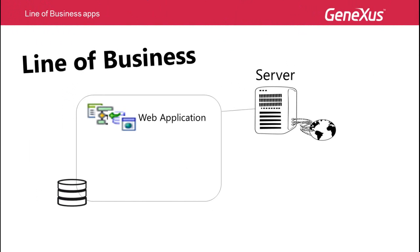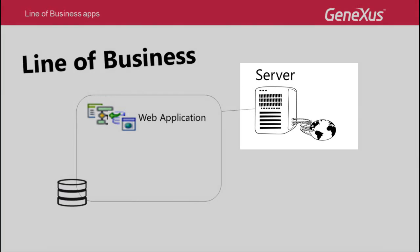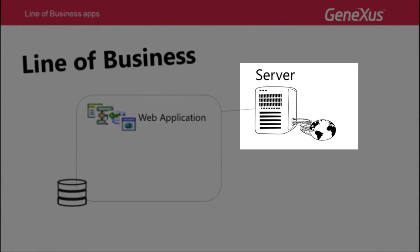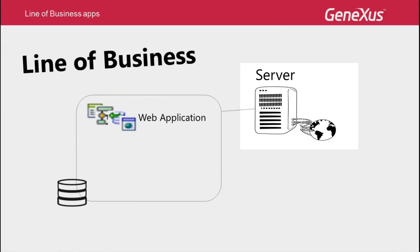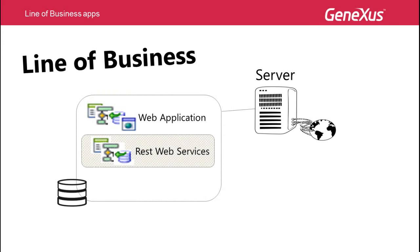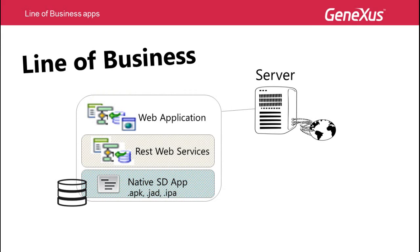The rollout of a corporate application usually takes place on the company's private server that's accessed through the internet. When it comes to generating the application in GeneXus, and on that server, besides the web application, REST services and the native application are also copied, with APK, JAD, IPA, etc., depending on each particular case.